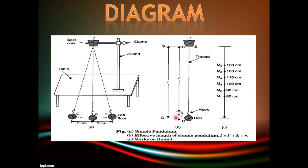The effective length consists of L', that is the length of the thread, H that is the length of the hook, and R that is the radius of the bob. So including all three lengths L', H and R, we will get the effective length of the simple pendulum as L. Figure C shows the markings M1, M2, M3 and so on — these are the markings done for the corresponding effective lengths, and these markings have to be done on the thread.